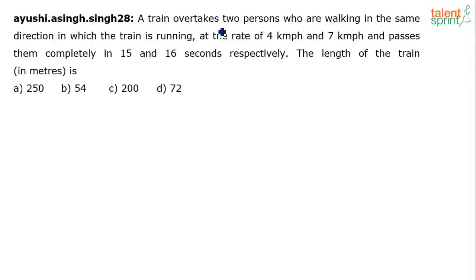The question reads: a train overtakes two persons who are walking in the same direction in which the train is running at the rate of 4 km per hour and 7 km per hour and passes them completely in 15 and 16 seconds respectively. The length of the train in meters is.